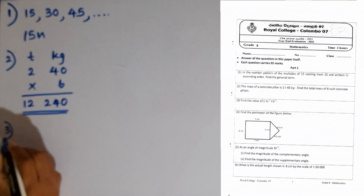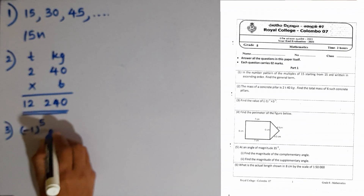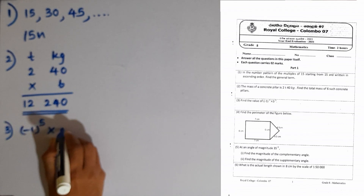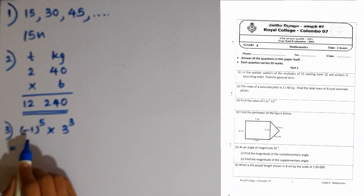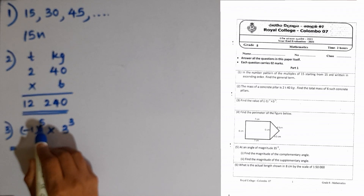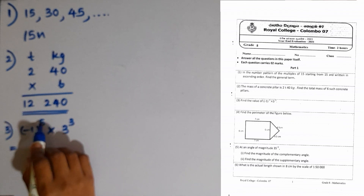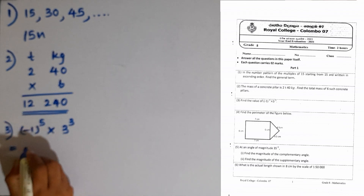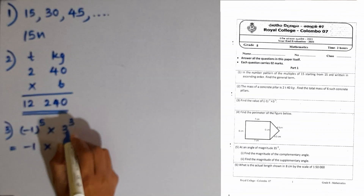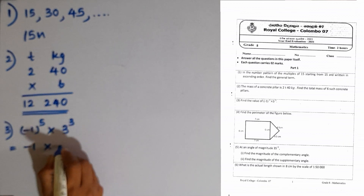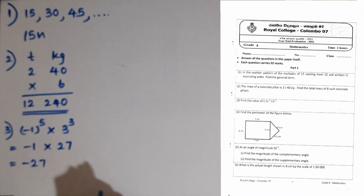Third question. Find the value of minus 1 to the power 5, times 3 to the power 3. In a negative number, if the power is even, the answer gets a positive value. This is an odd power, so the answer gets a negative value. The value is minus 1 multiplied by 3 to the power 3, which is 3 into 3 into 3, equal to 27. So minus 27 is the final answer.